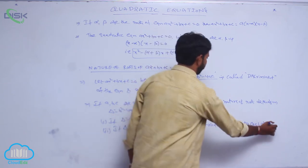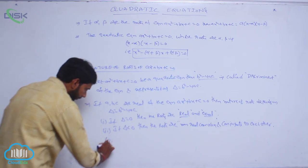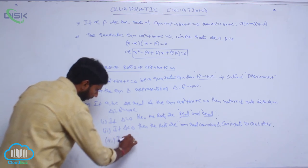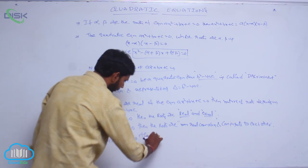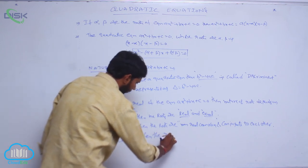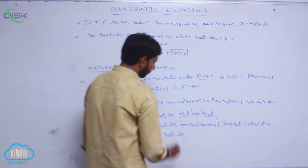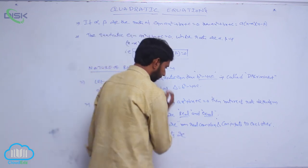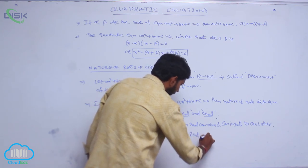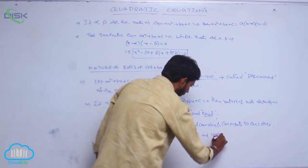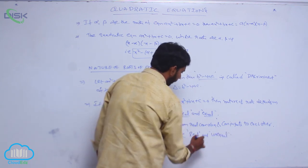If delta is greater than 0, then the roots are real and unequal.